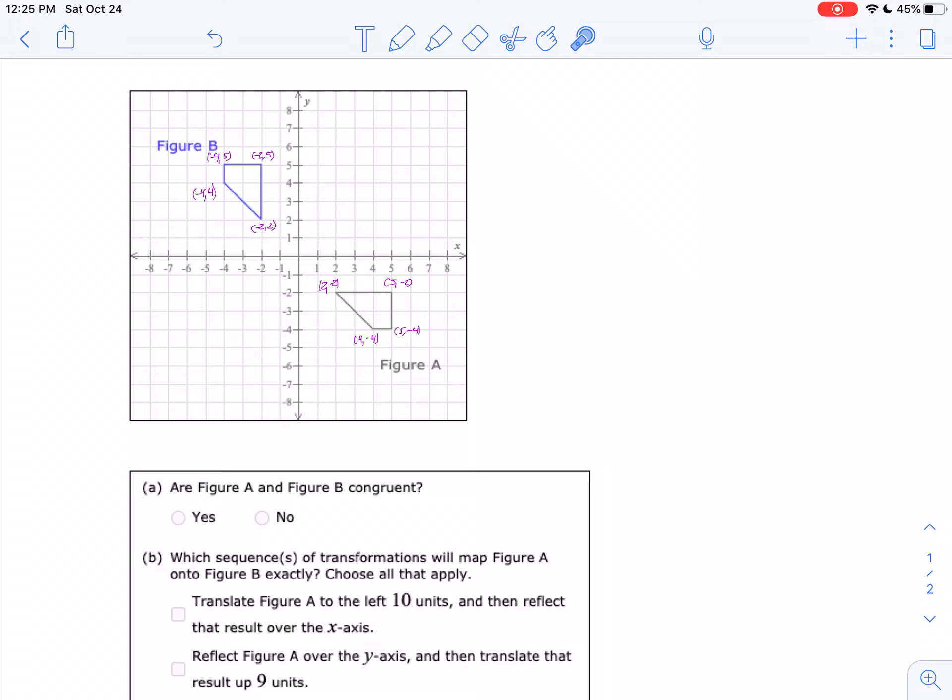The first question you got right is these two shapes—you can see they are congruent. So that one is yes. The question is, what transformations will map figure A onto figure B?